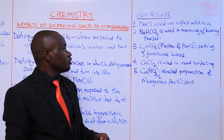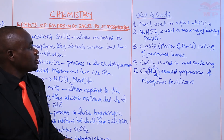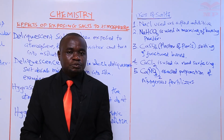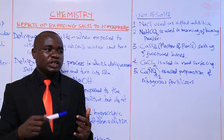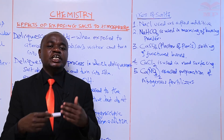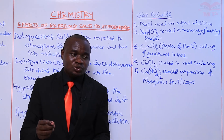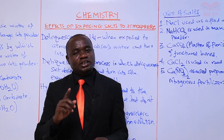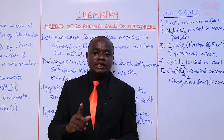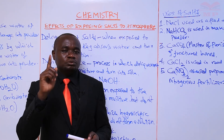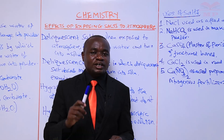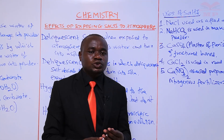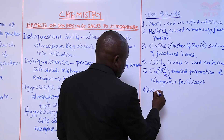Today we have learned about the effect of exposing salts to the atmosphere and we have seen that salts behave differently. Some salts, when exposed to the atmosphere, absorb water vapor and turn into a solution — such salts are called deliquescent salts. Those which absorb moisture but do not form a solution are called hygroscopic salts. Those which lose water of crystallization and form powder are called efflorescent salts. We also looked at uses of some salts.